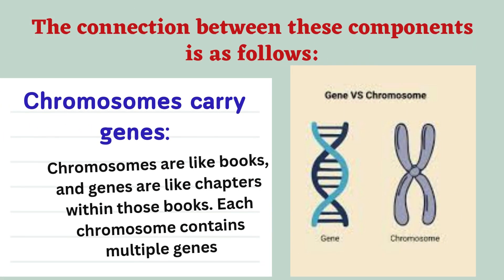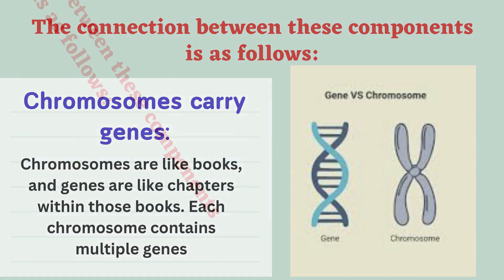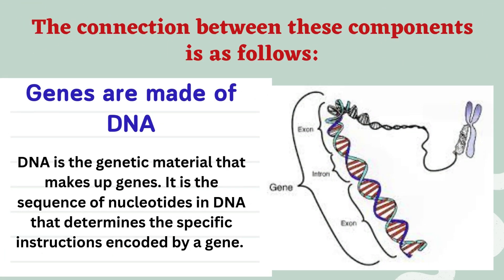The connection between these components is as follows. Chromosomes carry genes — chromosomes are like books, and genes are like chapters within those books; each chromosome contains multiple genes. Genes are made of DNA, which is the genetic material that makes up genes.